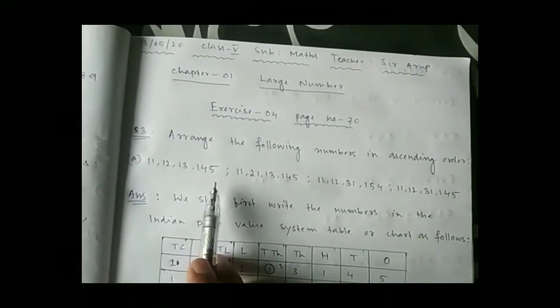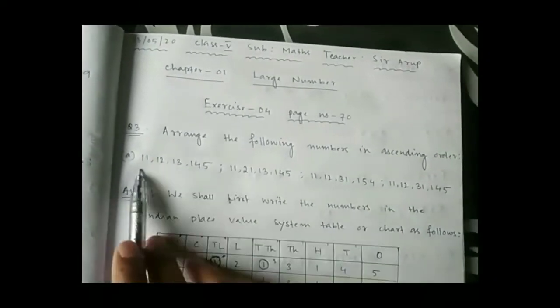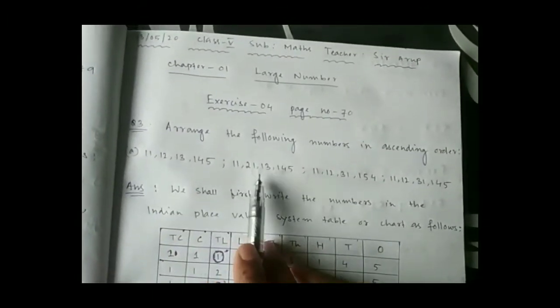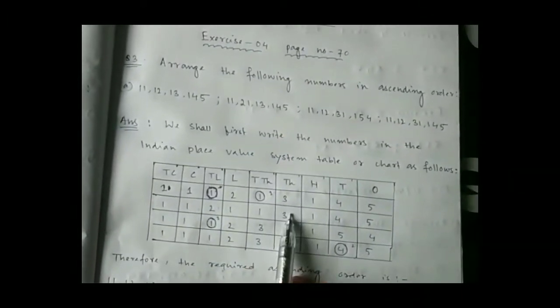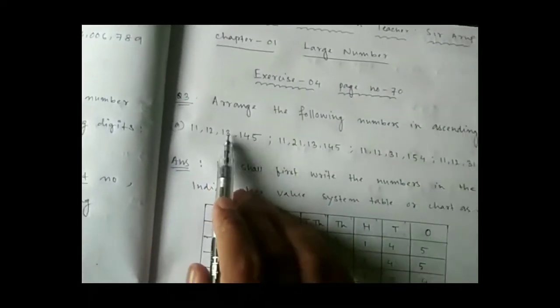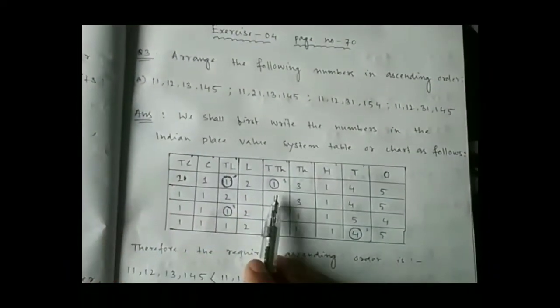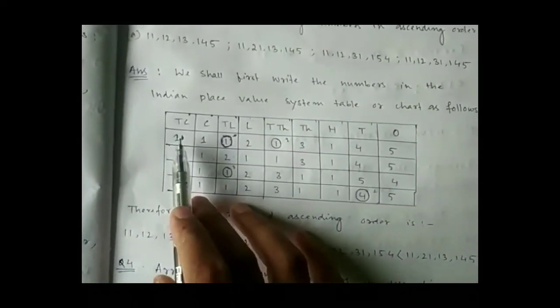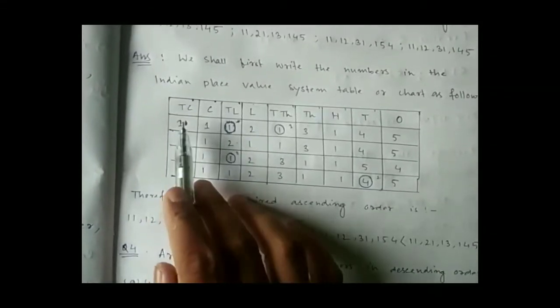Page number 70, question number 3: arrange the following numbers in ascending order. The numbers here are big nine-digit numbers. To identify which is the biggest and which is the smallest, we need to draw the Indian place value system table, because the first comma is placed after three digits and the remaining commas after every two digits, indicating these are Indian numbers. We put all numbers in this table in their respective places and compare digits of every place starting from the left side.